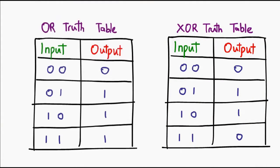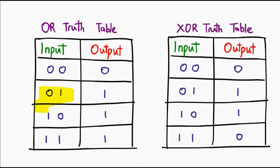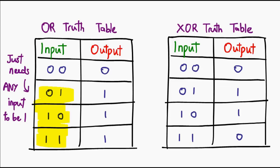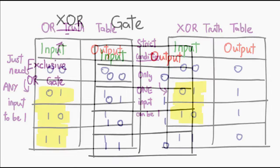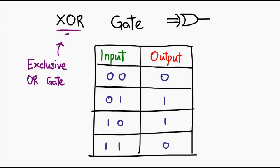Compared to the OR truth table, you realize that the difference is only in the last row — that is exactly what the 'exclusive' bit refers to. In the OR gate, as long as any one of the two inputs is true, the output will be true. This condition is loose in the sense that even if both inputs are true, the output is still true. For the XOR gate, we tighten this condition: the XOR gate specifies that exactly one of the inputs has to be true before the output is true. Therefore, for the last row it no longer fits the requirement, and its output is false. That is the exclusive OR gate, and the symbol looks something like this.